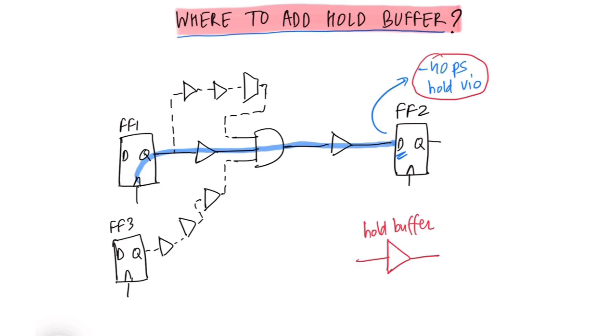So the same buffer will be slower in the max corner or the setup corner. Let's say that the same buffer will have a 75 picoseconds delay in the max corner.